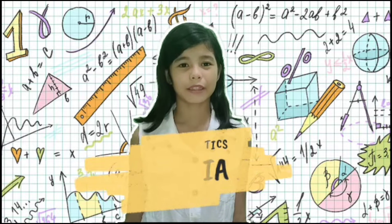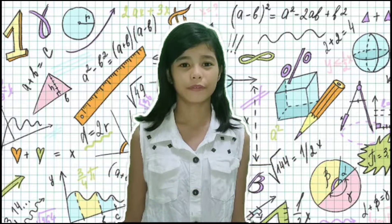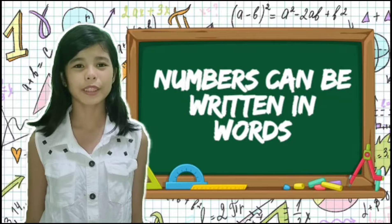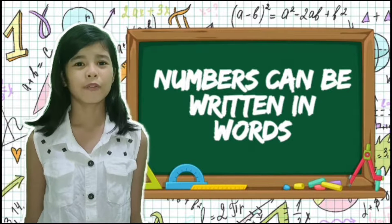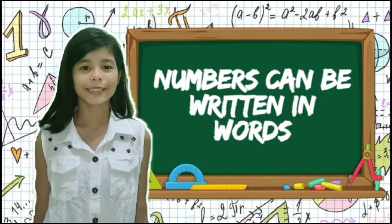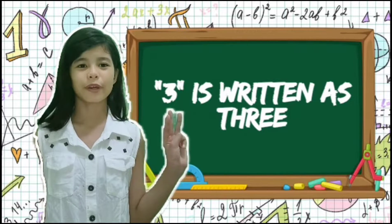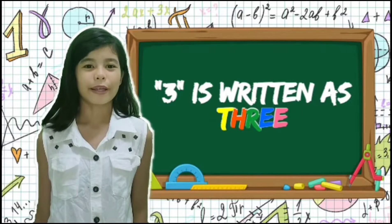And this is my math trivia blog. We know numbers can be written in words. For example, 3 is written as T-H-R-E-E.